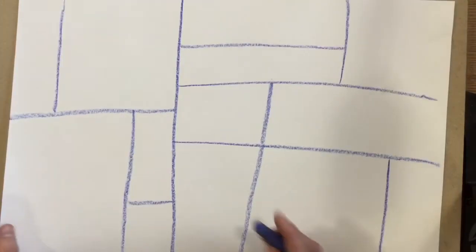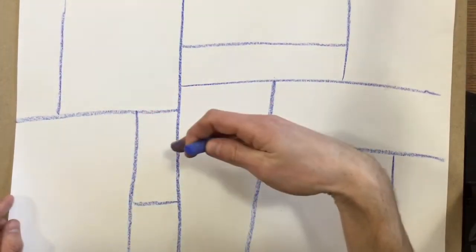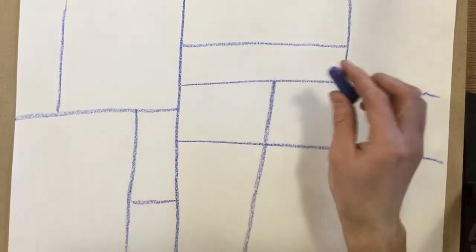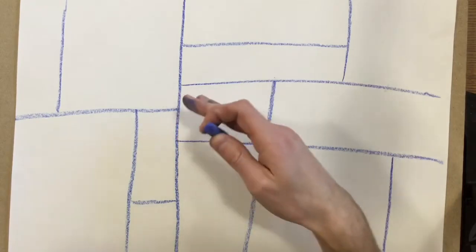Alright, after you have a bunch of vertical lines drawn, horizontal lines drawn, you're ready to start shading or coloring in these sections. Notice I did not use any diagonals or any other kind of lines in my work.